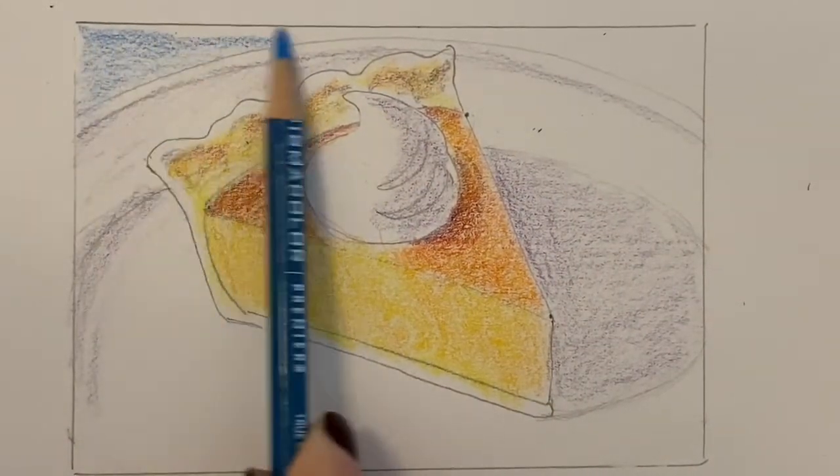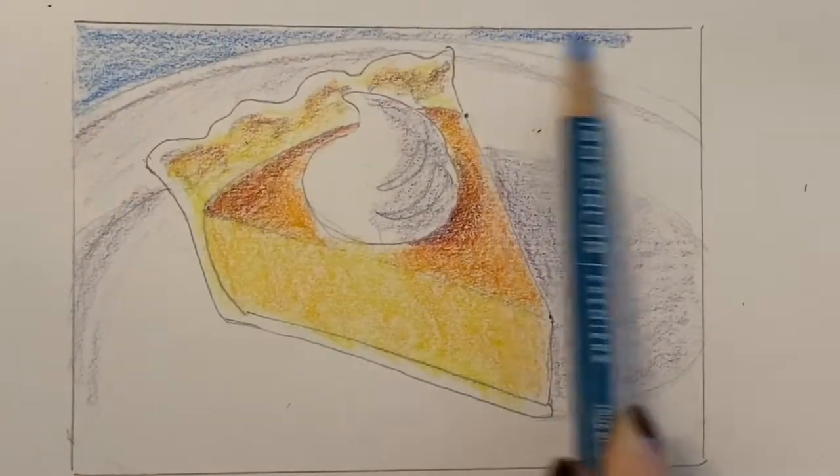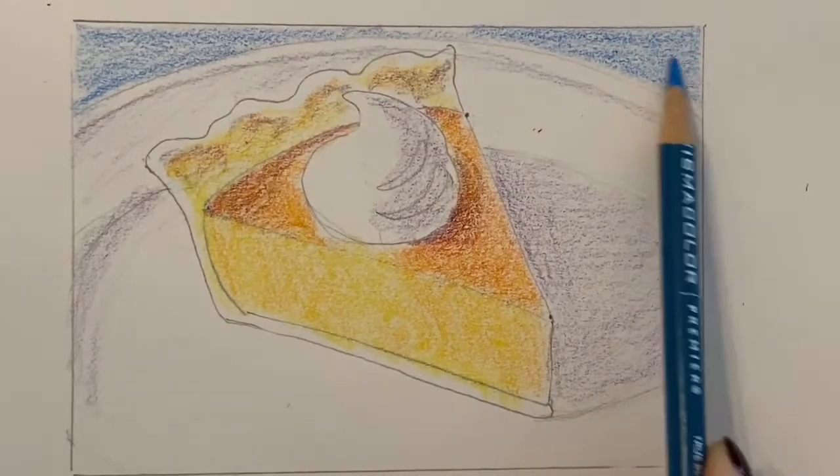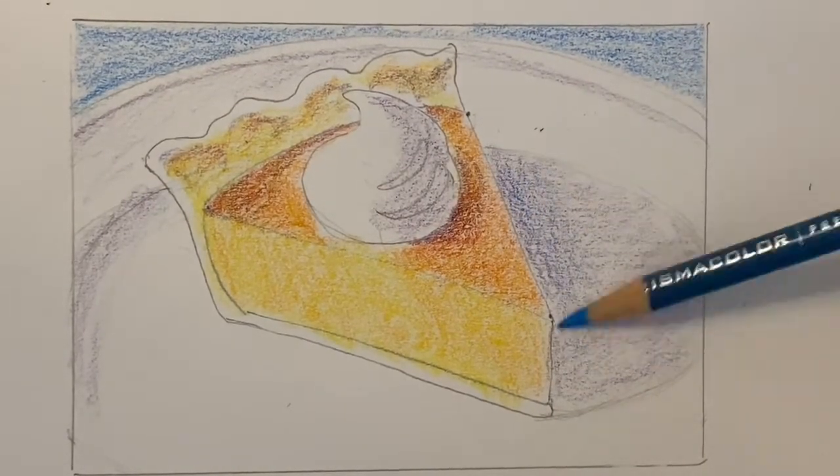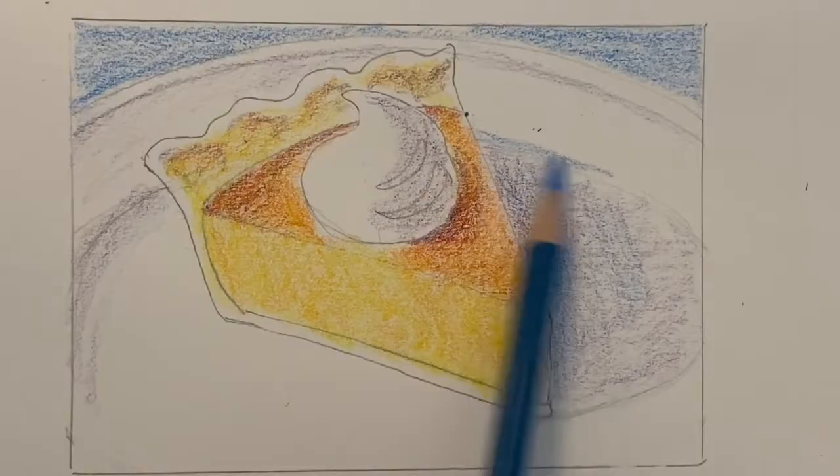Blue is an excellent color to use in the background of a piece that has an orange subject matter since they're complementary colors and blue is also a great color to mix in for your shadows.